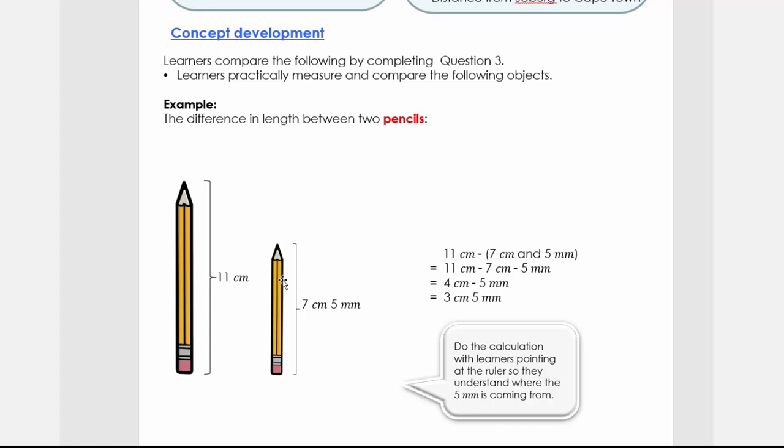What's also very nice is before you measure them, you can just estimate the length as well. What we have is 11 centimeters minus 7 centimeters and 5 millimeters. We're first going to subtract the centimeters, so 11 centimeters minus 7 centimeters will give me 4 centimeters.